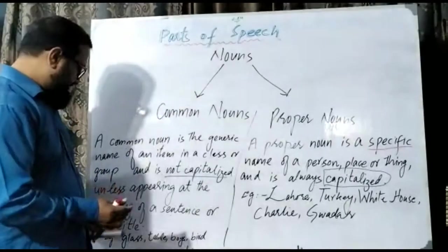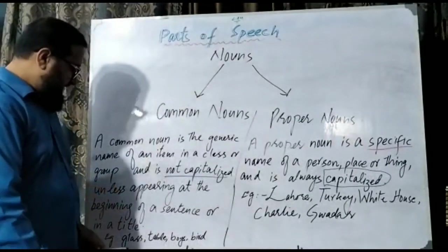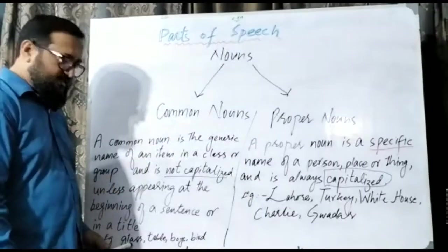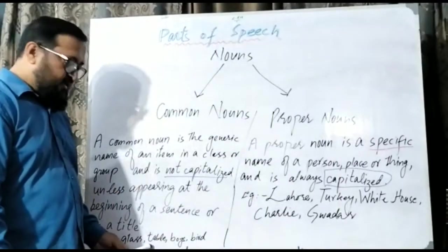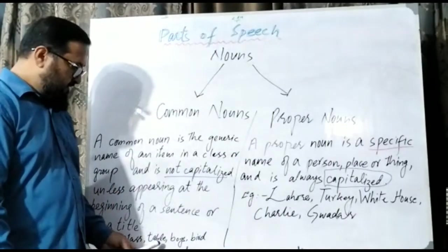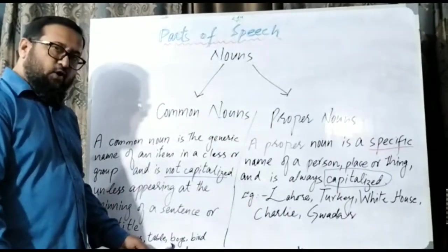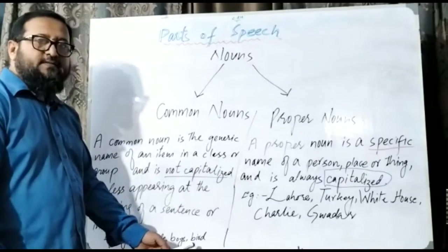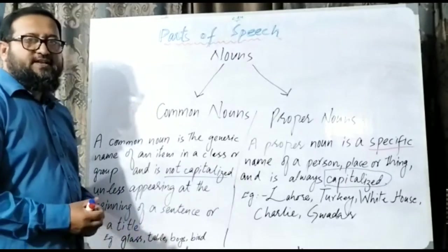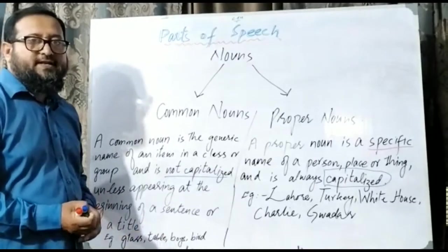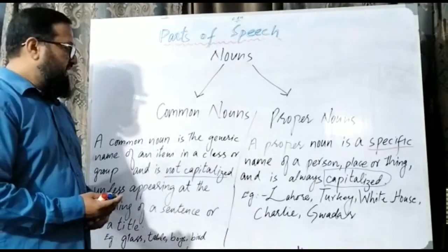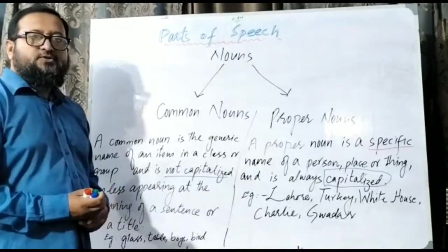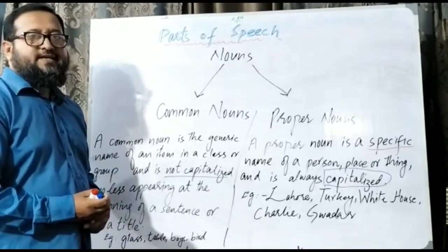Examples of common nouns are: glass, table, voice, bird. These are general names, common names. That's why they are not used in capital.